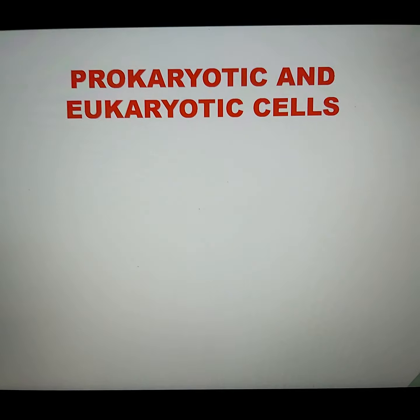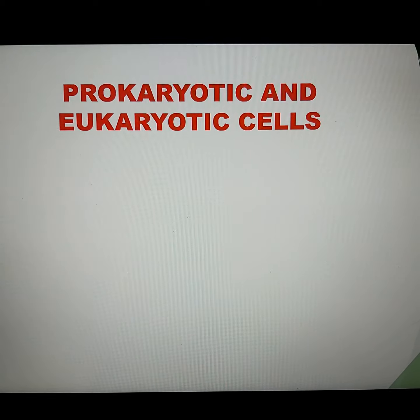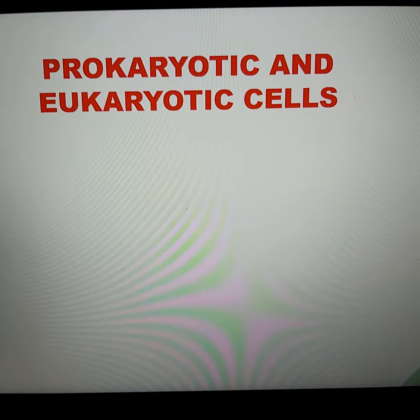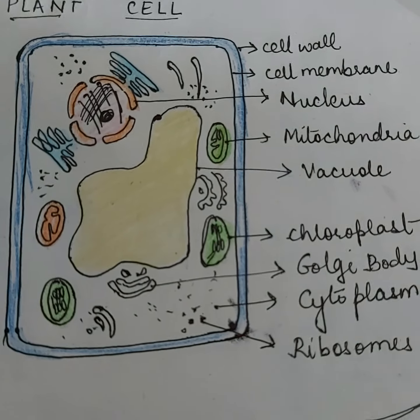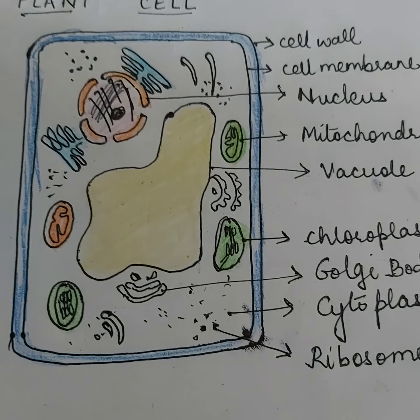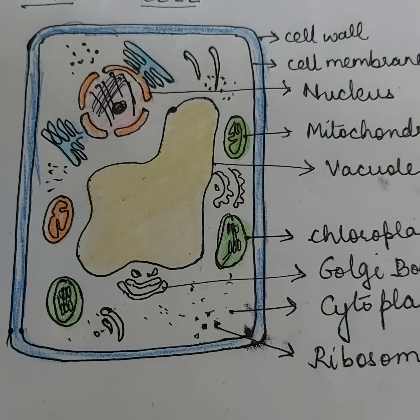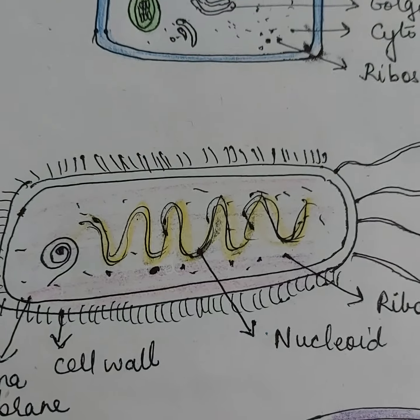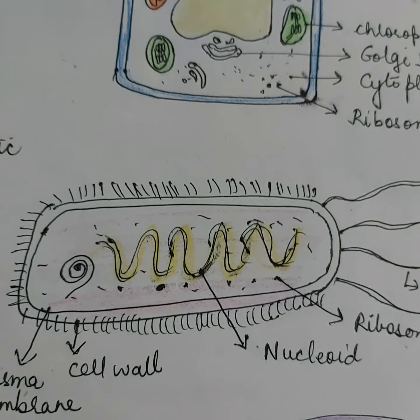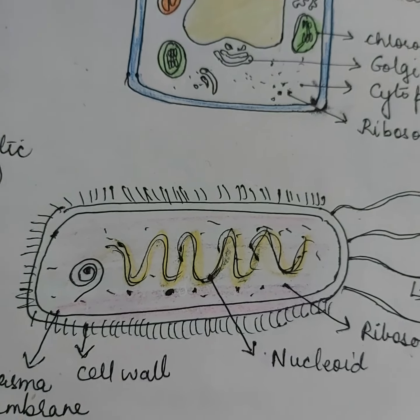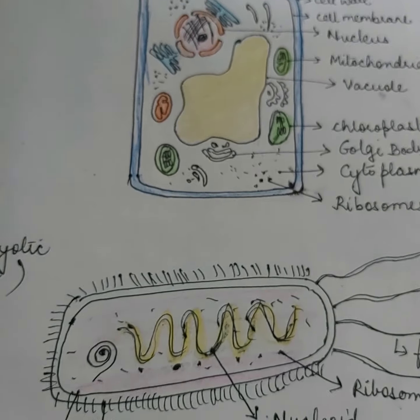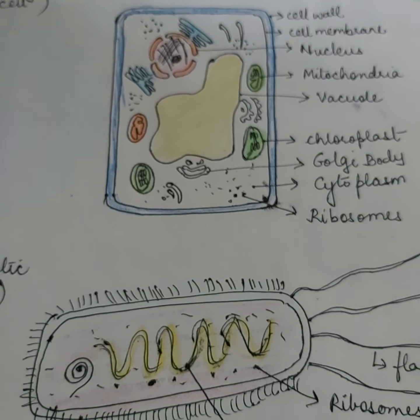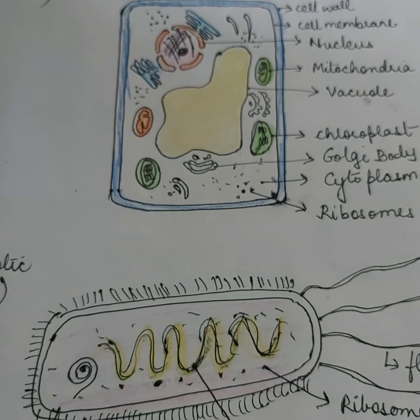Then comes the types of cells based on their complexity — whether it is a prokaryotic cell or a eukaryotic cell. A eukaryotic cell will have membrane-bound organelles and a well-defined nucleus, as you can see in the picture, whereas a prokaryotic cell will lack membrane-bound organelles and will have a nucleus which is highly primitive, lying as a diffused mass in the cytoplasm.